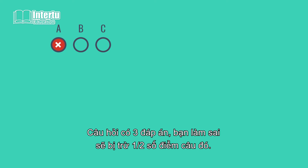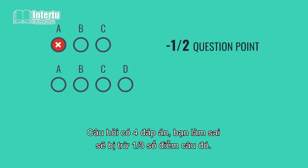Unlike SAT 1, SAT 2 still holds the rule of deducting points for wrong answers. For questions with 3 answer choices, half a point is deducted for an incorrect answer. For questions with 4 answer choices, one third of a point is deducted for an incorrect answer.